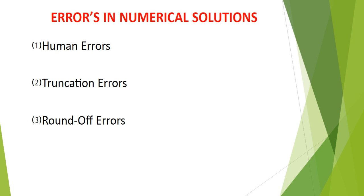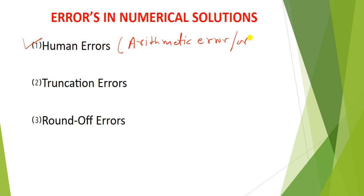There are three major sources of error in computation. The first one is human errors, which means arithmetic errors or programming errors.